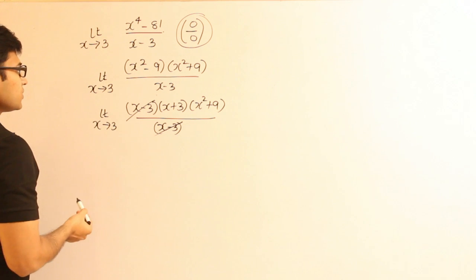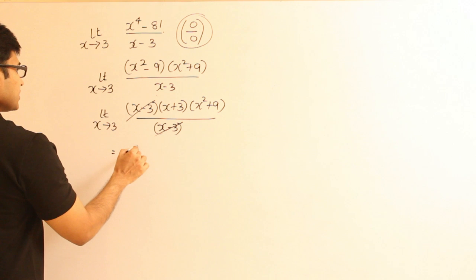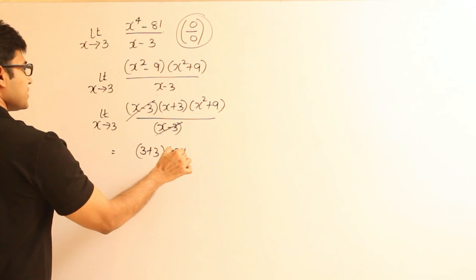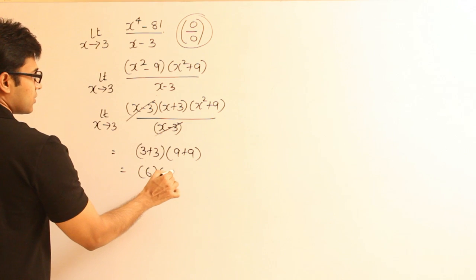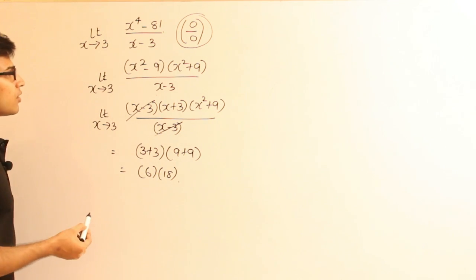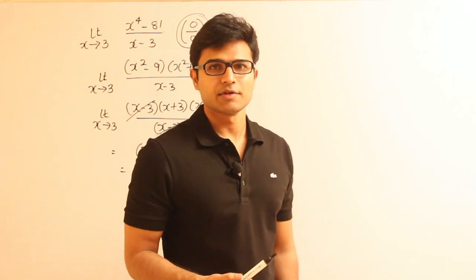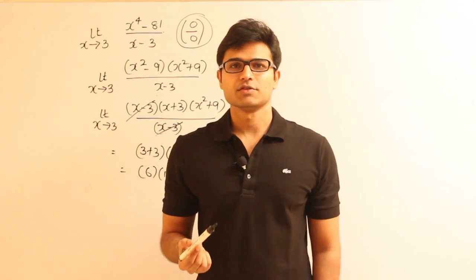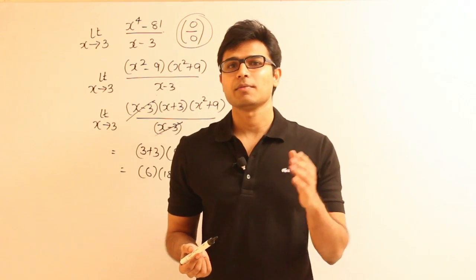Now we substitute x equals 3. Then we get (3 plus 3) times (9 plus 9), which is 6 times 18. So you can simplify that. That is how you solve it. The key point from this example is: you need not always find out whether the limit exists or not. Only in questions where it is required — meaning if the option asks about limit existence — do you apply that method.